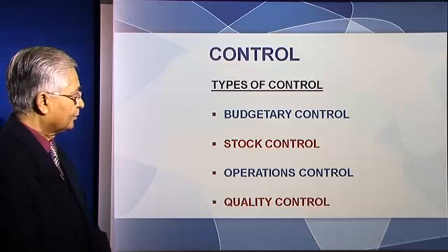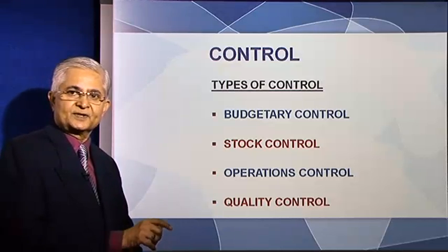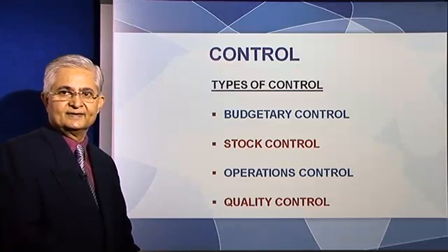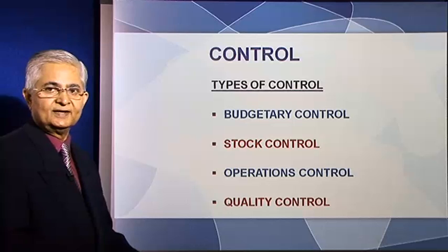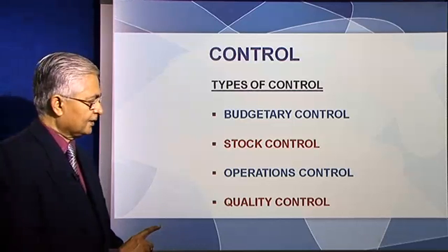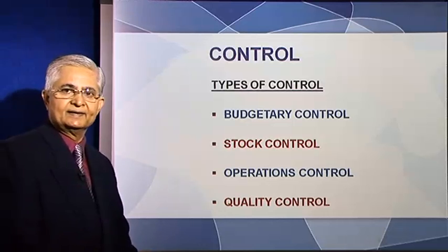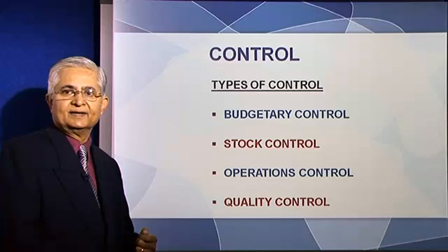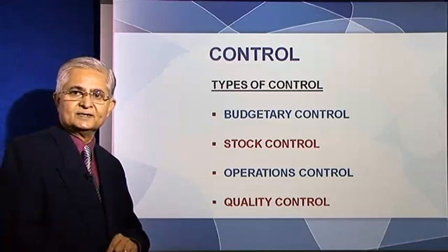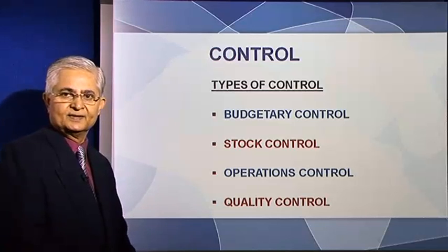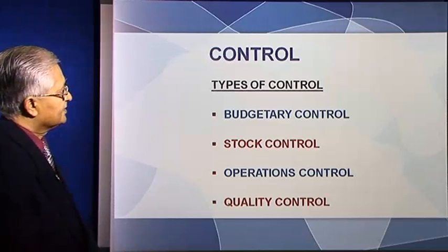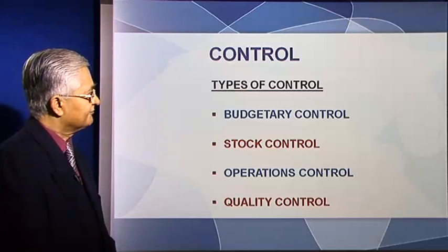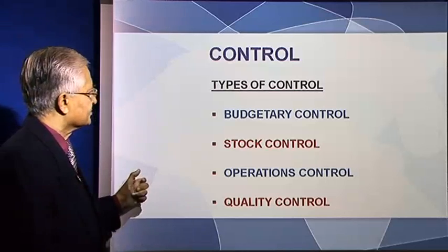And then we have quality control. This is the control of quality of the output. Regardless of the particular activity where quality control is being applied, the principles of quality control would remain the same. Its application would vary depending on the nature of the activity. So, what we need to appreciate when we talk about control is that there are four broadly different kinds of control.